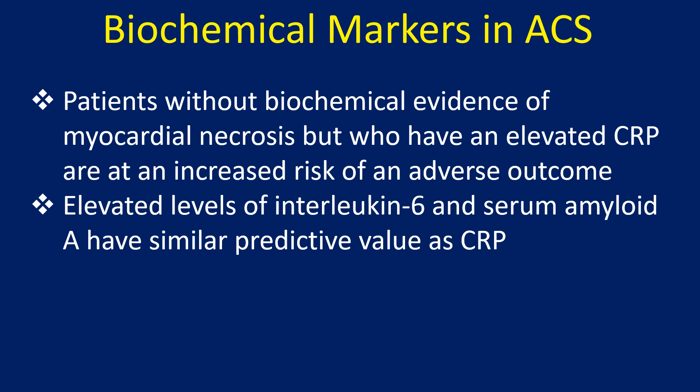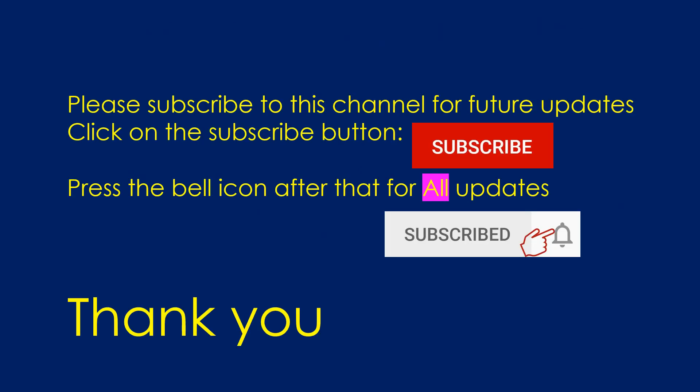Patients without biochemical evidence of myocardial necrosis but who have an elevated CRP are at increased risk of an adverse outcome. Elevated levels of interleukin-6 and serum amyloid A have similar predictive value as CRP.